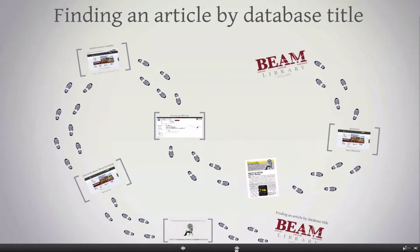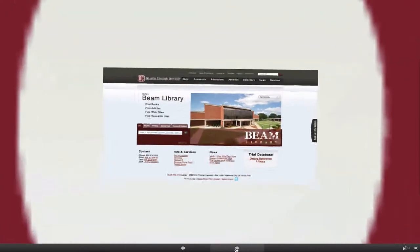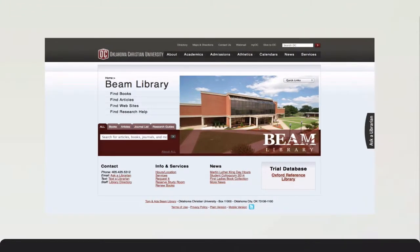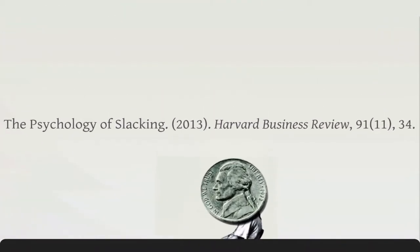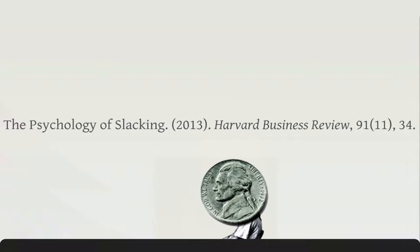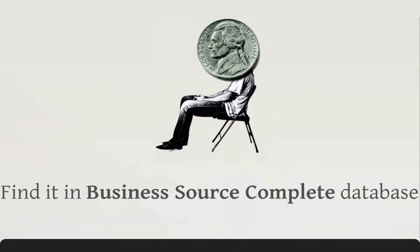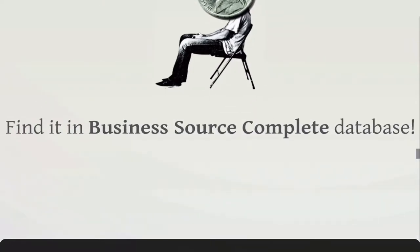When you have some basic citation information for an article, like the title and author, and you also know the database title in which your article is found, the library homepage makes it easy to locate. Let's say we need to find this article, The Psychology of Slacking from the Harvard Business Review, and our instructor has informed us that the article can be accessed in the Business Source Complete database.